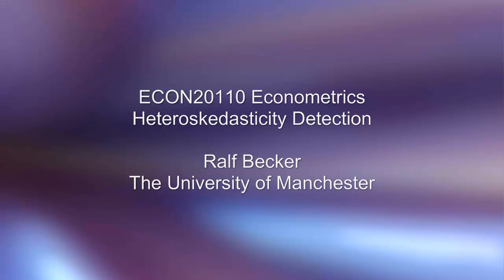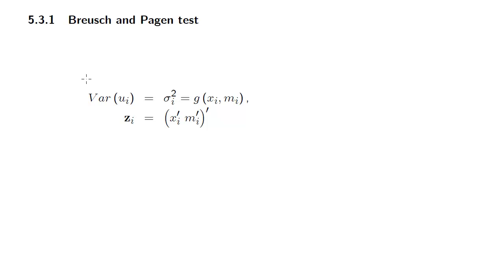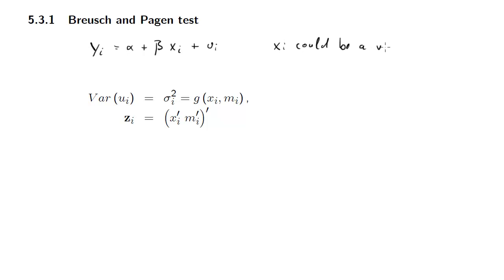In this clip I'll talk about detecting heteroscedasticity, which we know to be a breach of one of our Gauss-Markov assumptions, namely the homoscedasticity Gauss-Markov assumption. Let us first state the regression model we are talking about. Think about Xi potentially being a vector rather than just a scalar variable, and we'll abbreviate the test as BP.